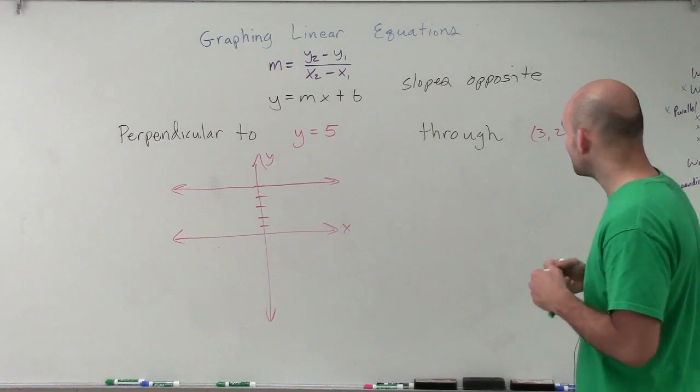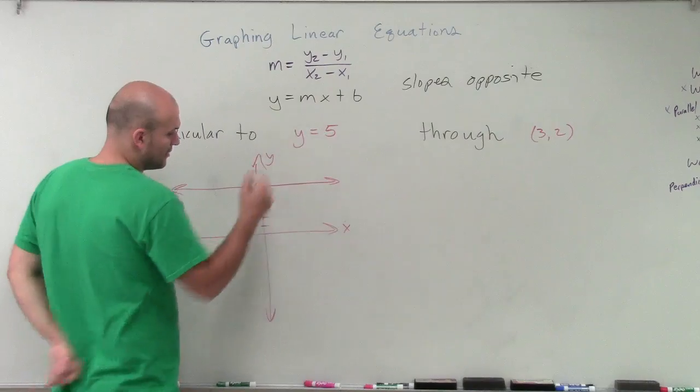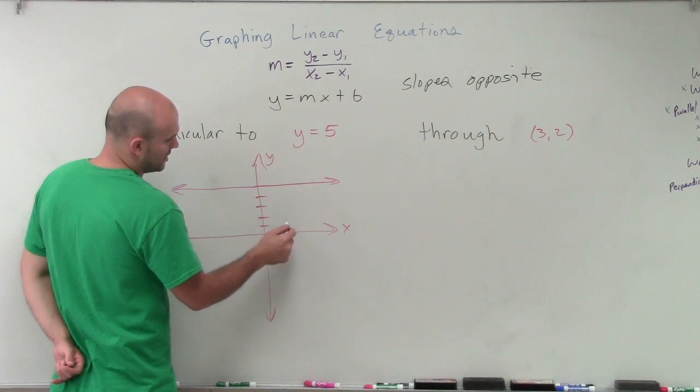Now, I need to find an equation that's going to be perpendicular to it that goes to the point 3 comma 2. 1, 2, 3, up 2.